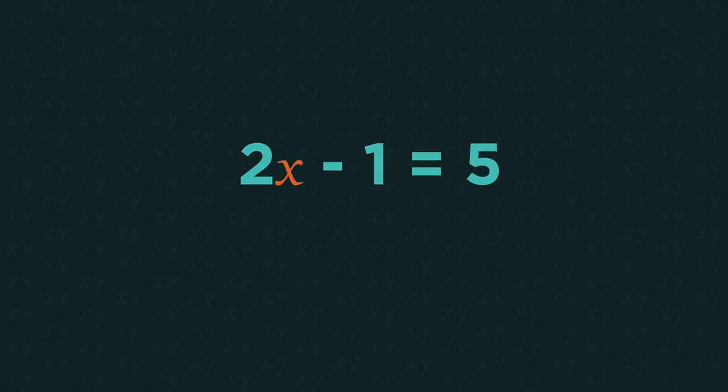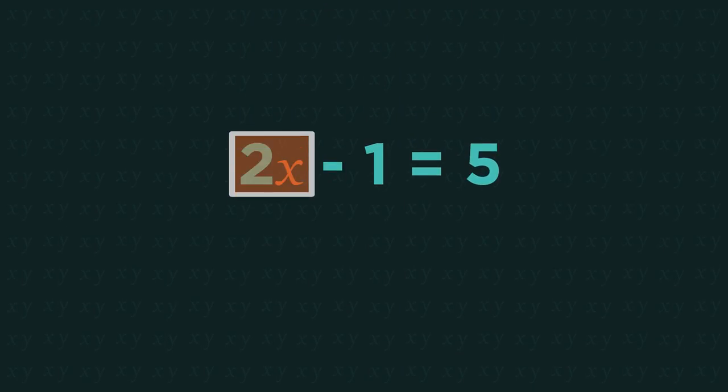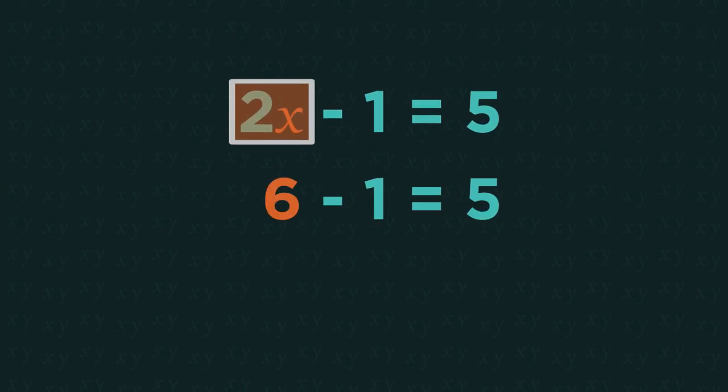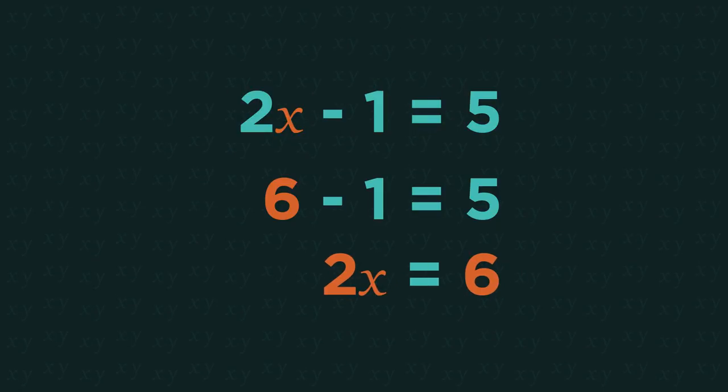We can still use this same approach for slightly trickier questions. Something minus one equals six equals five. So that something must equal six. So our unknown two x equals six.